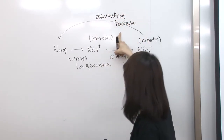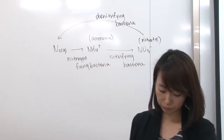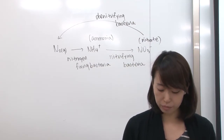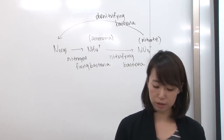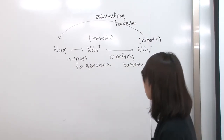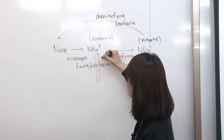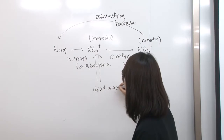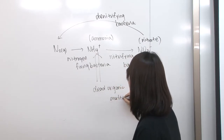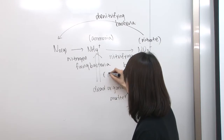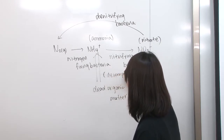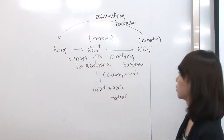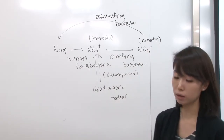Denitrifying bacteria converts nitrate into N2. The decomposers are bacteria that break down dead organic matter like dead plants and animals into ammonia, so ammonia can also be produced from dead organic matter through decomposers. This is the nitrogen cycle that exists between the plants and bacteria.